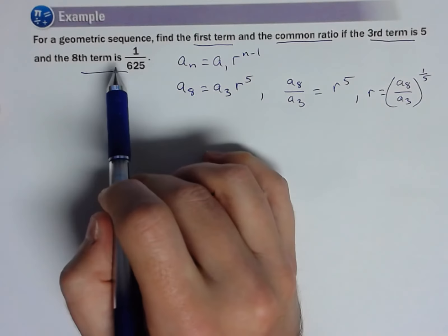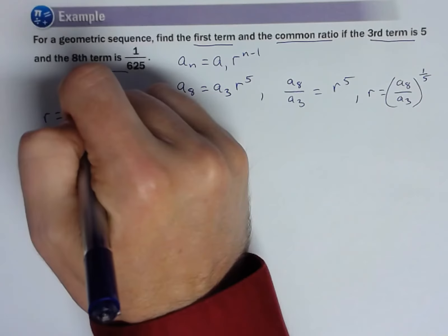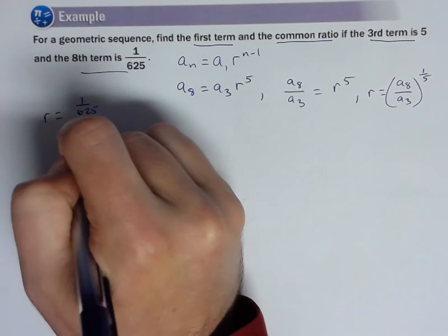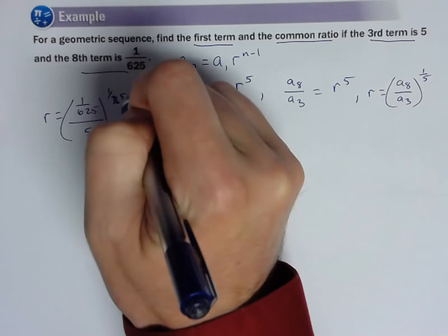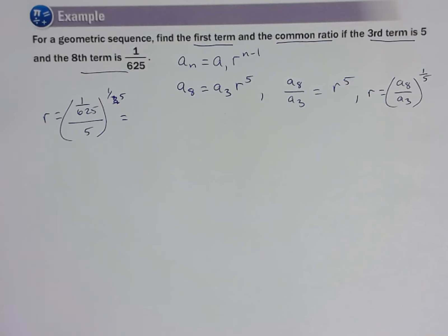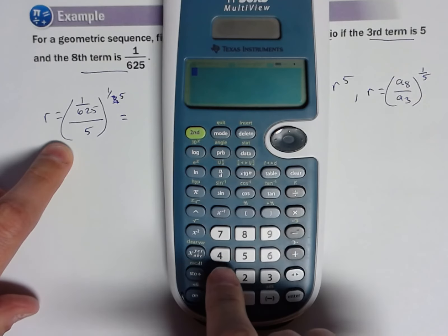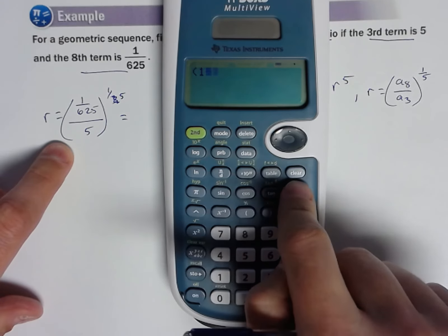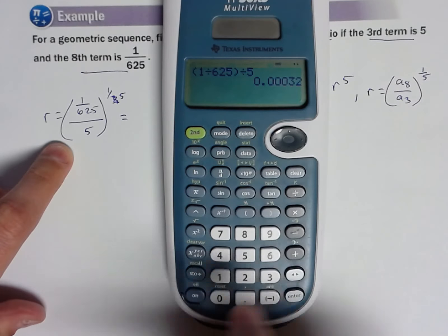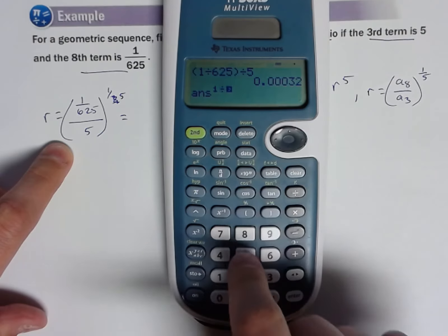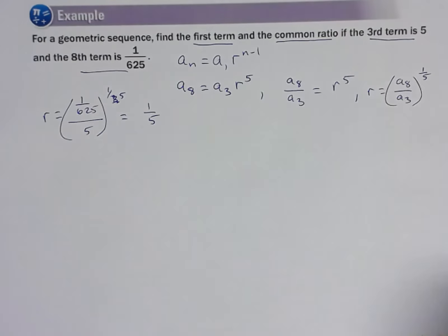So now let's just substitute things in. So R equals the eighth term, which is one over 625, over the third term, which is five, all to the one-fifth power. Now here's where our calculator comes in. Let's just plug this in. So one divided by 625 divided by five, and I'm going to raise that to the one-fifth power. And it is one-fifth. So my R is one-fifth.